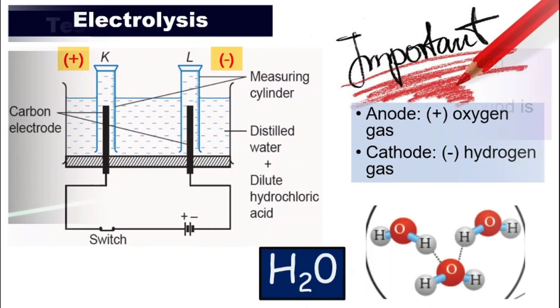So, again, this is very important. You have to remember the name of this process. Electrolysis. The name of the electrodes, the anode, the cathode. And why do we add in a dilute hydrochloric acid. And which gas goes to which electrodes. And also, you have to know how to prove or how to tell that the gas in the cylinder K and L is oxygen or hydrogen.